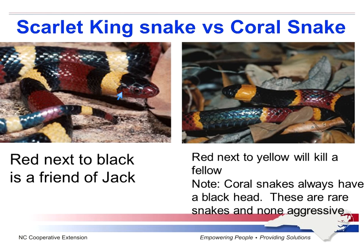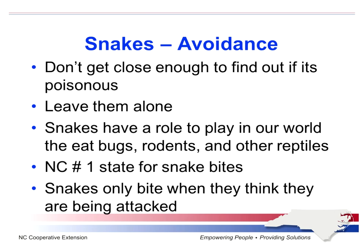I have been brought in a snake to identify and people just want to know, is it poisonous? So you can ask them these questions, but you should discourage people from getting too close. The thing that we recommend is to avoid them — they really do have a role in our environment. They help with rodents, eat bugs, and a lot of the snakes are eating other snakes. One of the reasons why North Carolina is the number one state for snake bites is people mess with them.